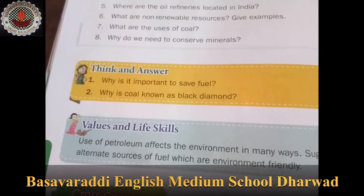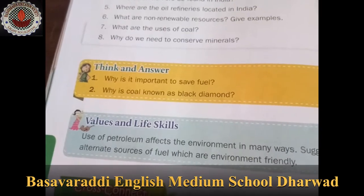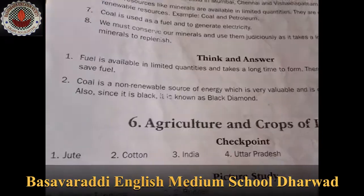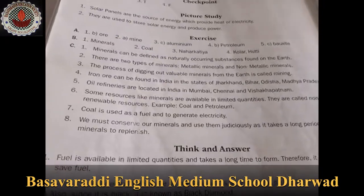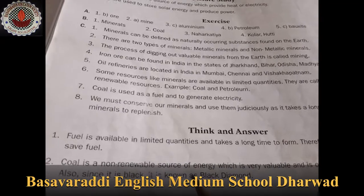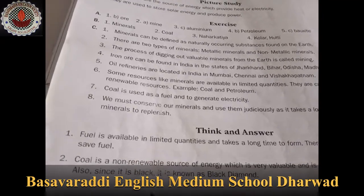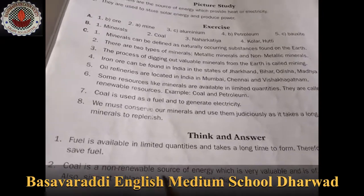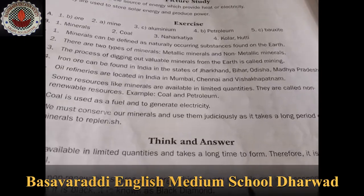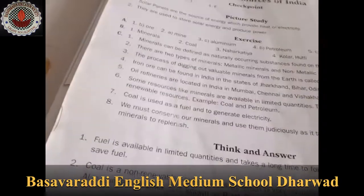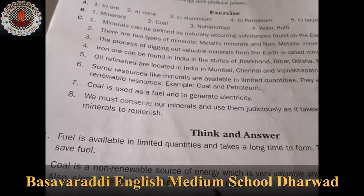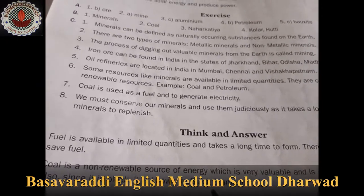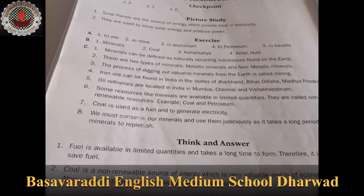Second question: Why is coal known as black diamond? Coal is a non-renewable source of energy, which is very valuable and of economic importance. Since it is black, it is known as black diamond. And we completed the exercise.